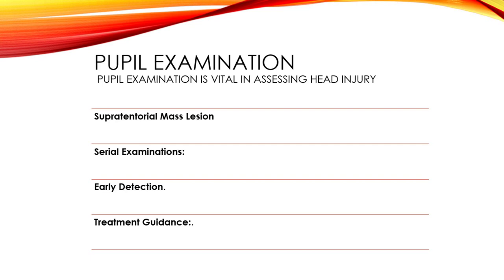The findings from pupil examination can determine the need for diagnostic tests, neurosurgical interventions, or adjustments in the patient's treatment. In summary, pupil examination — including pupil size and light response assessment — is an integral part of the Glasgow Coma Scale (GCS) and is crucial in assessing and monitoring the neurological status of head injuries.